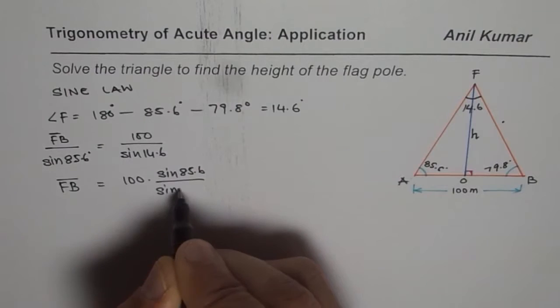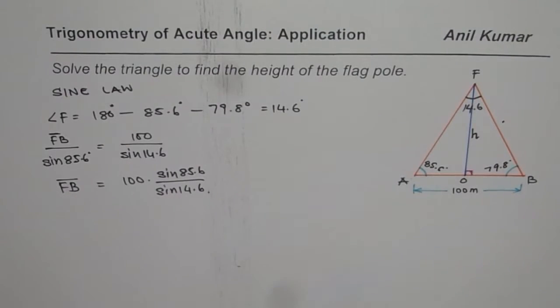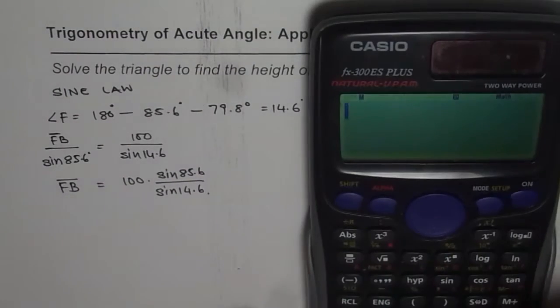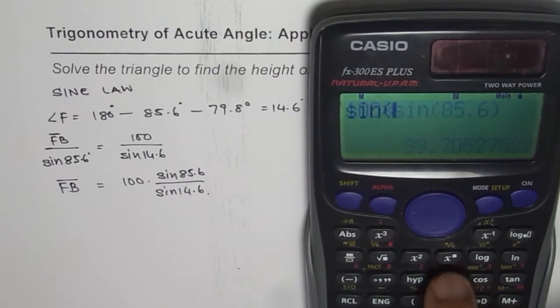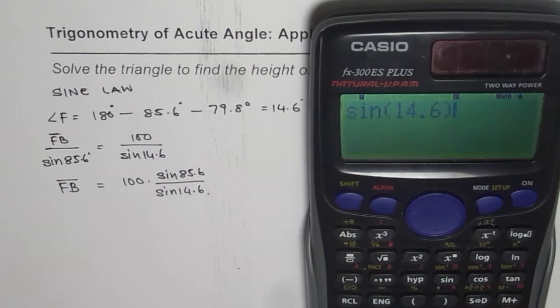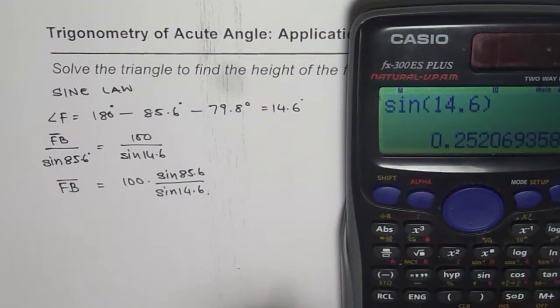So 100 times sine of 85.6 divided by sine of 14.6 equals 0.25.